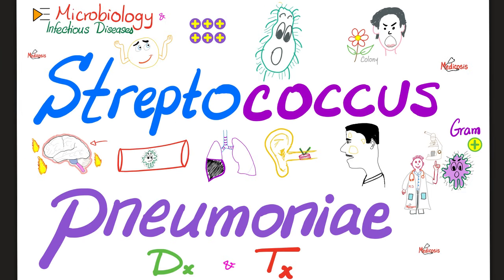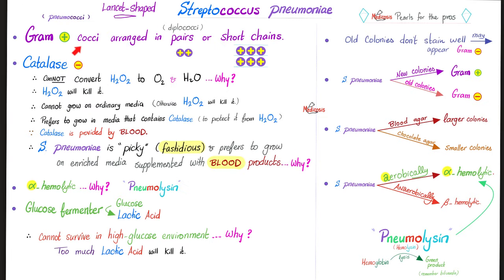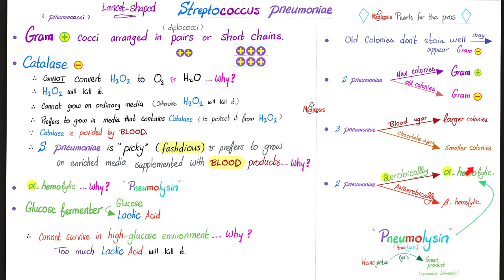Coming up next: Streptococcus pneumoniae. Gram-positive cocci arranged in pairs — diplococcus — or short chains. They are lancet-shaped, catalase negative, alpha hemolytic because of their pneumolysin, and glucose fermenters. New, fresh colonies are gram-positive — purple. But old colonies that have been sitting on the petri dish for a while can appear pink, meaning they did not retain the crystal violet stain well. Streptococcus pneumoniae can form large or small colonies and is most often alpha hemolytic under aerobic conditions.